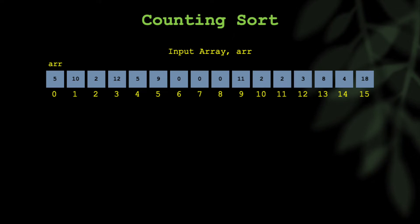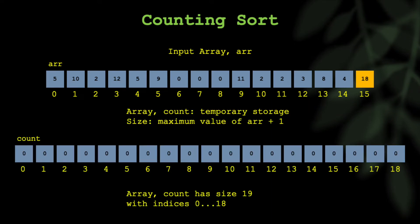So let's say we want to sort this input array, arr. It has 16 elements indexed from 0 to 15, and we're going to use counting sort to sort this out. The way you would do that is first you would find out the maximum value of this input array. In this case, it's 18, and then you create a temporary array. We'll call it count, and it will be of size maximum value of array, which is 18, plus 1. So count will be of size 19, with indexes from 0 to 18.